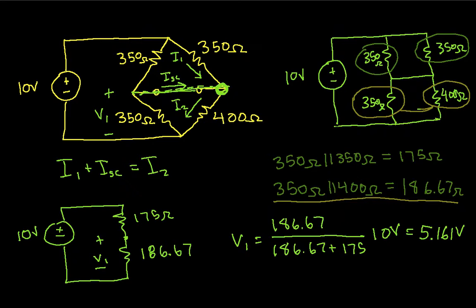Knowing this, I can now find I1. It's going to be 10 volts minus 5.161 volts over 350 ohms. And when I compute this, I get that I1 is equal to 13.83 milliamps.